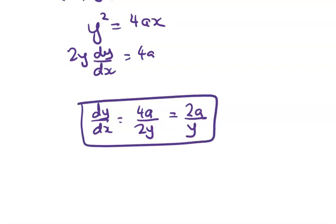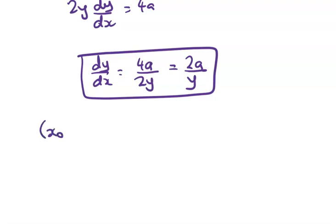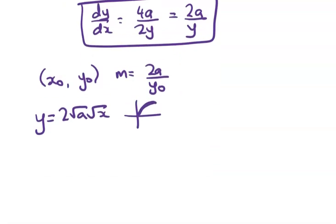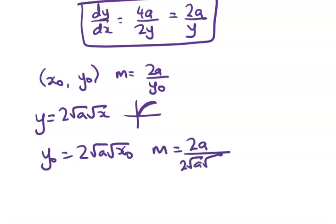All right, so we're starting off with that. Now, for the first tangent line, we've got x naught, y naught, and we've got m is equal to 2a over y naught. Working from what we had earlier, we have y is equal to 2 root a root x, because I'm working for that first point, I'm on the top arm. Okay, so that gives me y naught is equal to 2 root a root x naught, and m is equal to 2a over 2 root a root x naught, which cleans up nicely to give me root a over root x naught.